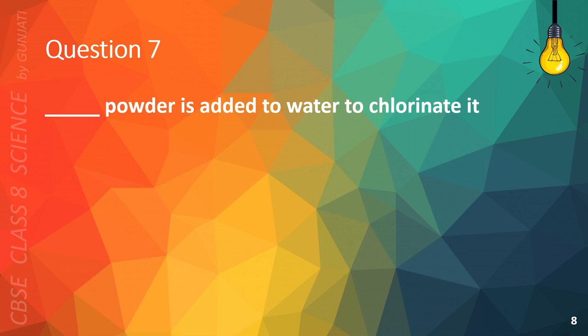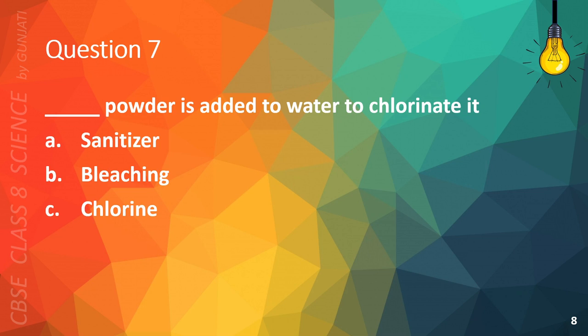Question 7. Blank powder is added to water to chlorinate it. A. Sanitizer. B. Bleaching. C. Chlorine. Or D. Nitrogen. The correct answer is B. Bleaching.